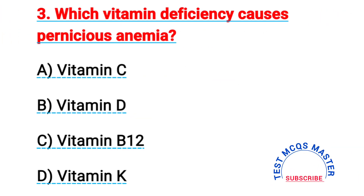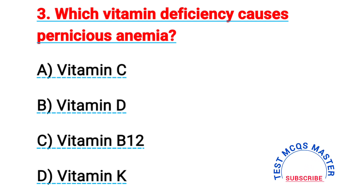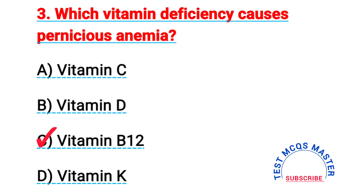Question number three: which vitamin deficiency causes pernicious anemia? The right answer is C, vitamin B12.